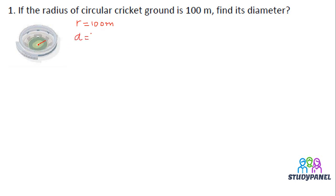So diameter is 2 into radius. So value place: 2 into 100 meter. And the correct answer is, 2 ones are 2, and we will add this 0. So it is 200 meter.